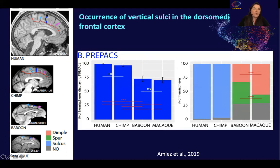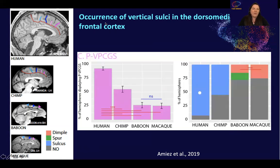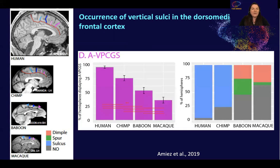The pre-paracentral sulcus is equally present in humans and chimps, and equally present in baboons and macaques, but again with a difference between hominids and old world monkeys. The same morphological pattern holds: this sulcus is a full sulcus in humans and chimps, a spur in baboons, and a dimple in macaques. The posterior vertical paracingulate sulcus is present in almost all hemispheres in humans, falls somewhat in chimps, and is less frequent in baboons and macaques. The entire vertical paracingulate sulcus shows a linear decrease in frequency of occurrence across these four species, with the same morphological gradient.